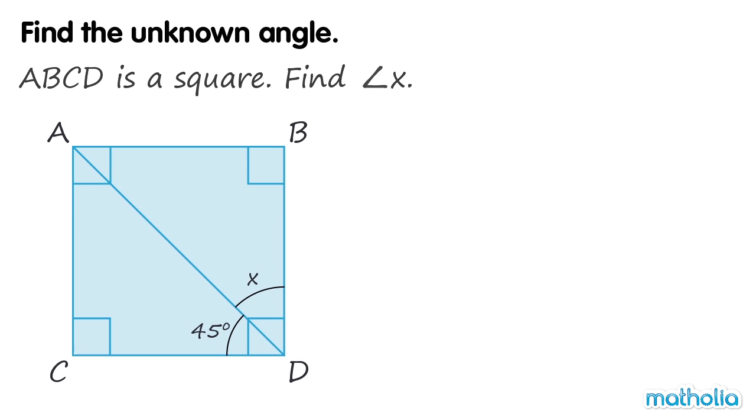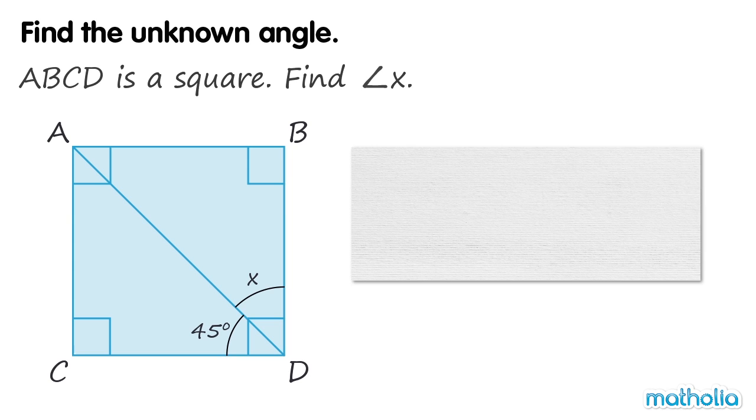All of the angles inside a square are right angles. A right angle is 90 degrees. So angle BDC is equal to 90 degrees.